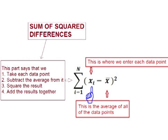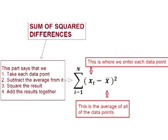The formula shows an x with a small i next to it, which means plug each data point in as the x value. The x with a line over it is the average or mean of all the data points — in some examples this is displayed as a small u. So what this section says to do is take each data point and subtract the mean from that data point, giving us the distance from each data point to the mean. The formula then states to square each answer.